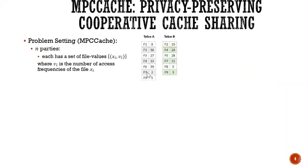So formally, we consider our problem settings as follows. We have N parties. It has a set of files and values, XI and VI. So for example here, we have the operator A with the file F1 and they have VI as the number of access frequencies of the file XI. So here, VI equals to V1 equals to A.